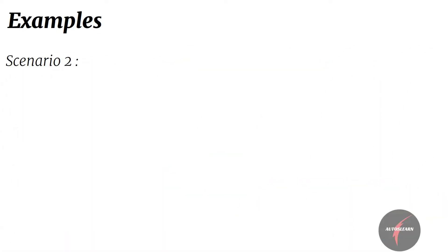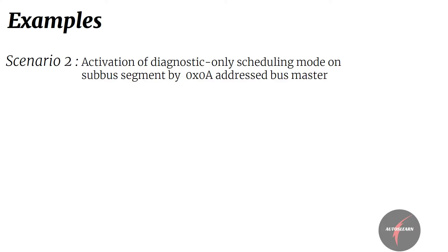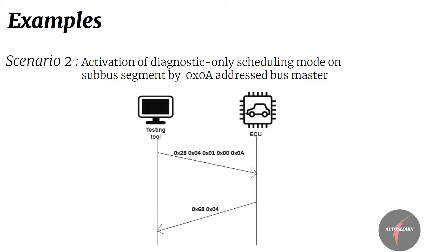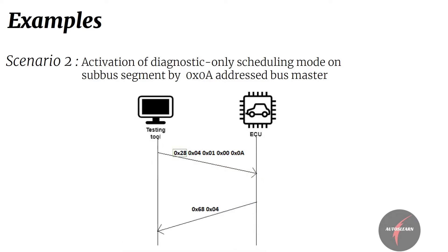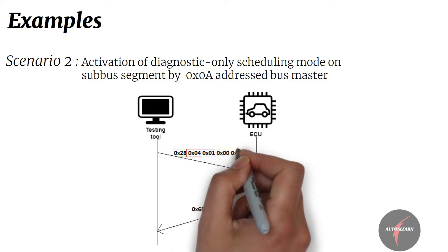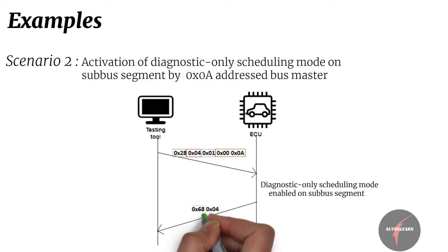Let's consider another scenario where the diagnostic only scheduling mode needs to be activated on a sub-bus segment by the bus master addressed by 0x0A. The request shall be sent as follows: communication control request SID set to 0x28, control type set to 4 (enable RX and disable TX with enhanced address information), communication type set to 1 (normal message), and node identification number set to 0x0A. The diagnostic only scheduling mode shall be activated on the sub-bus segment. The response from the bus master shall be: communication control response SID set to 0x68 and control type set to 4.